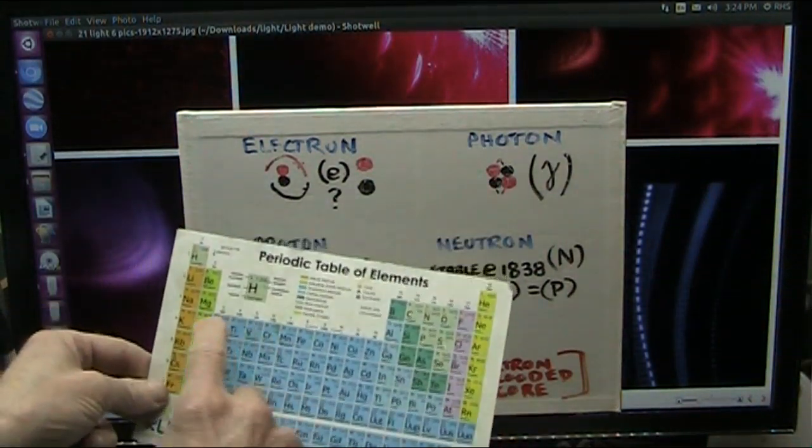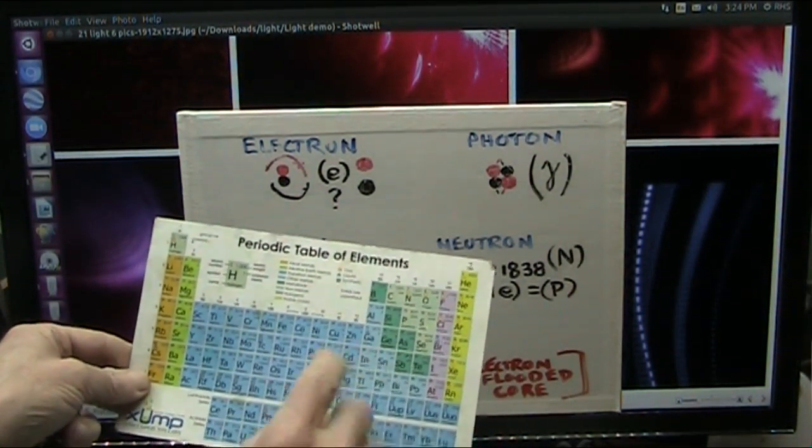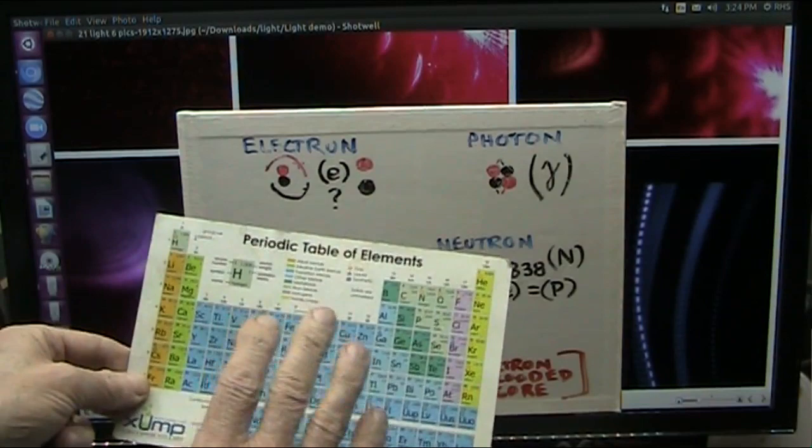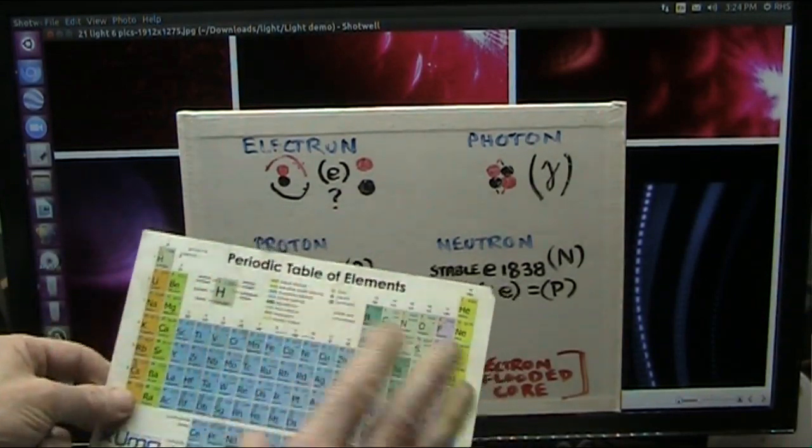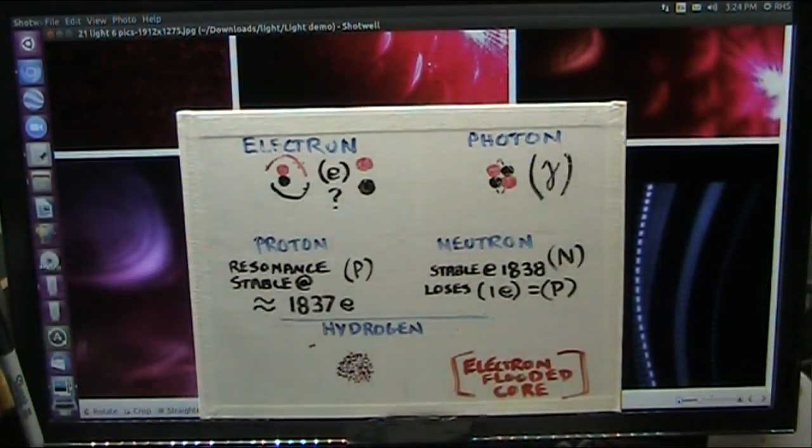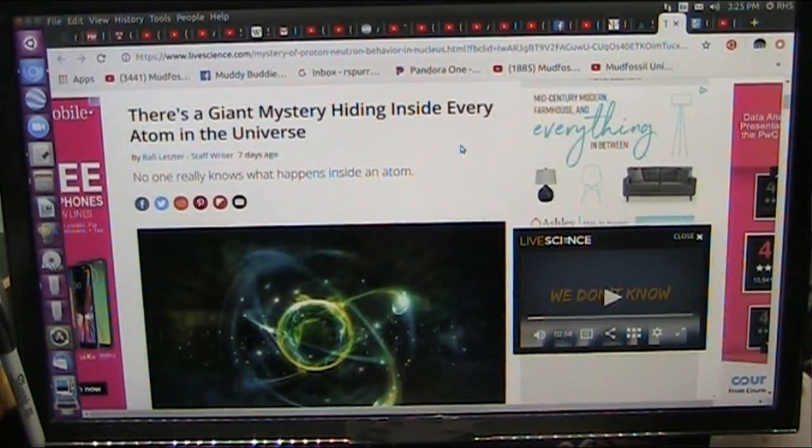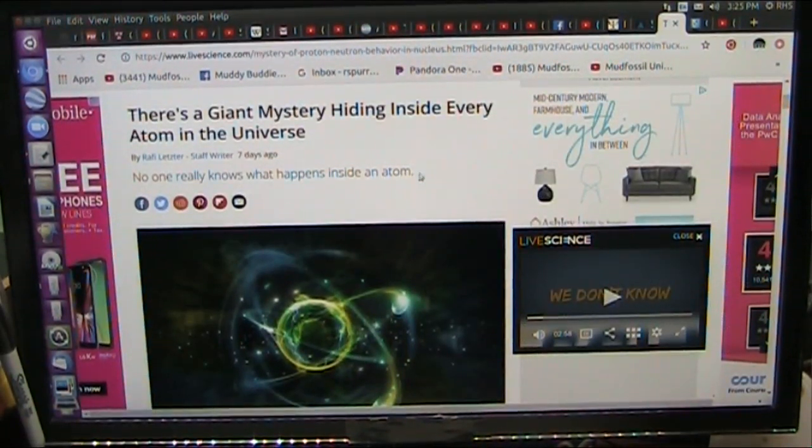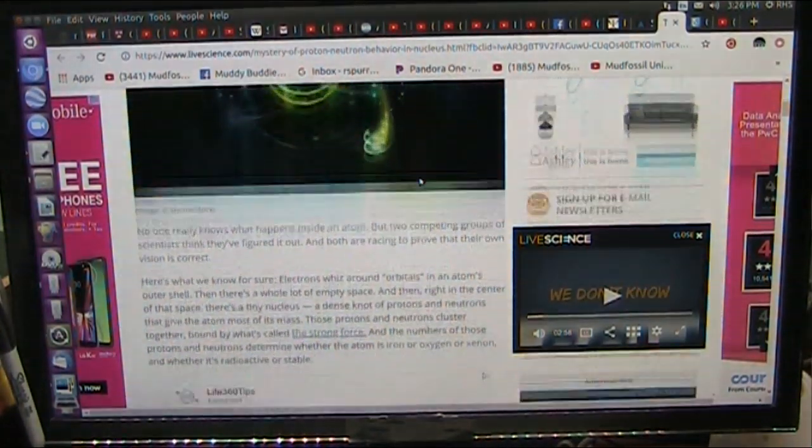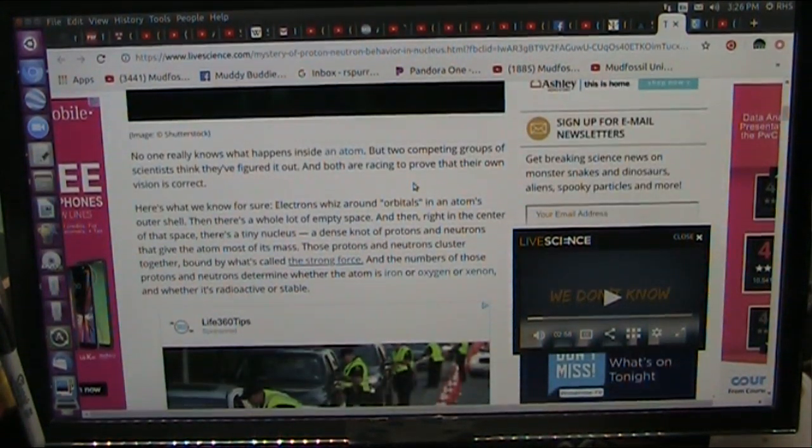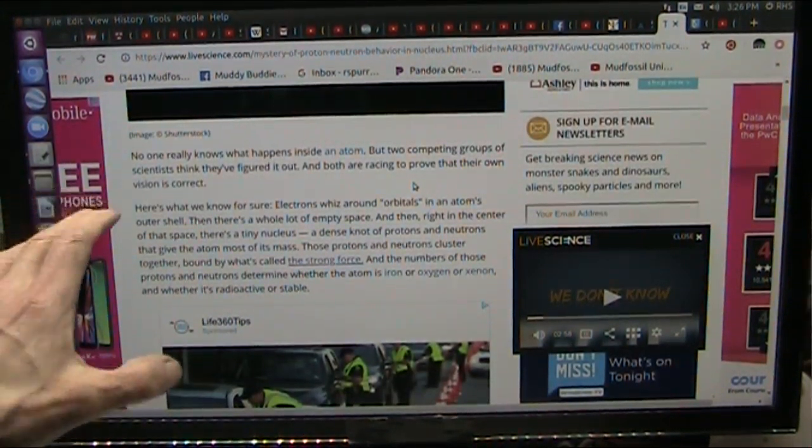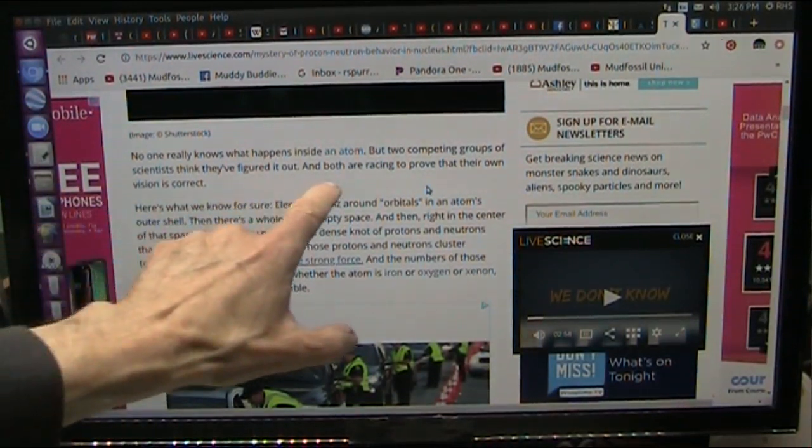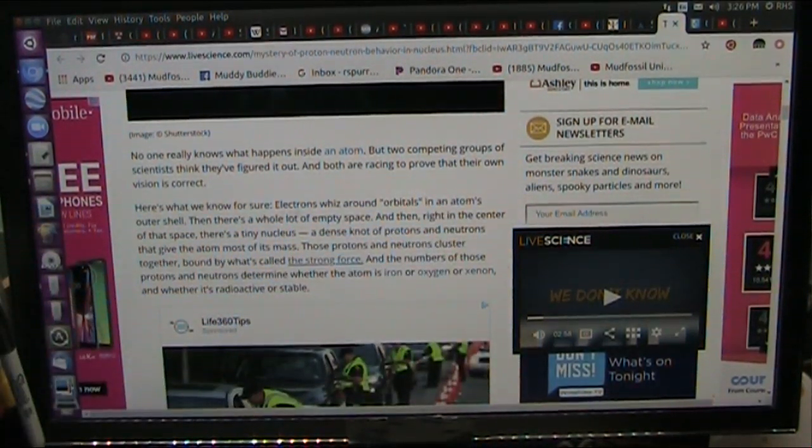Every one of these, in between each one of these, there's literally thousands and thousands of different positions in electrons. Now we know, they say there's a giant mystery inside of every atom. Well, they do realize that things are not correct now, and they're racing to prove their own vision is correct.